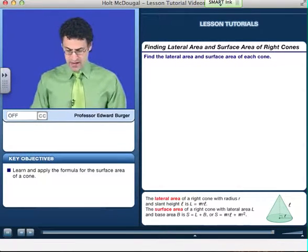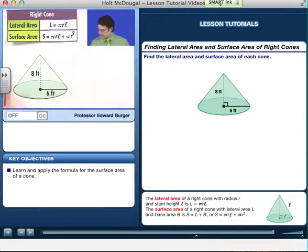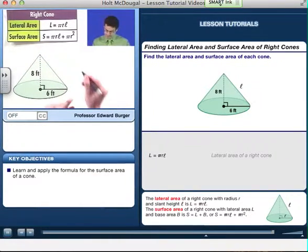Now here we've got a right cone, and we're told that it's right, so that means that this angle is exactly 90 degrees. Remember, that's what it means to be right. And I want us to find the lateral area and the surface area. Well, for the lateral area, I know it is pi r, that's given to be 6,